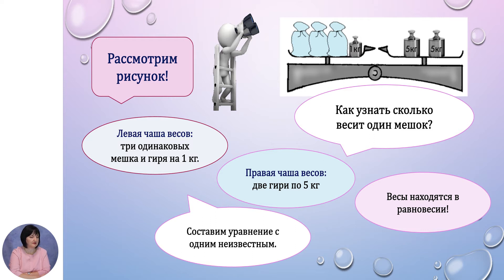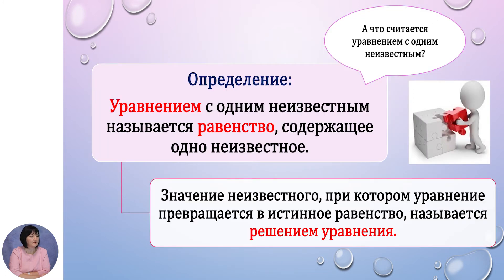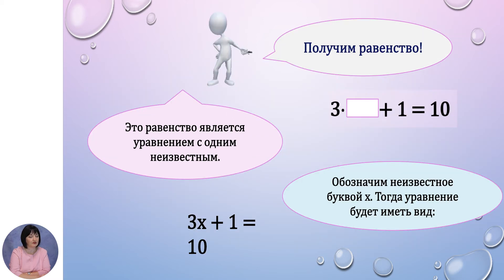Составим уравнение с одним неизвестным. Уравнением с одним неизвестным называется равенство, содержащее эту неизвестную. Значение неизвестного, при котором уравнение превращается в истинное равенство, называется решением уравнения. По условиям задачи мы получим: 3 умножить на неизвестное число, прибавить 1, и в правой части получим 10 (две гири по 5 кг). Если неизвестное число обозначим буквой x, уравнение будет: 3x плюс 1 равно 10.